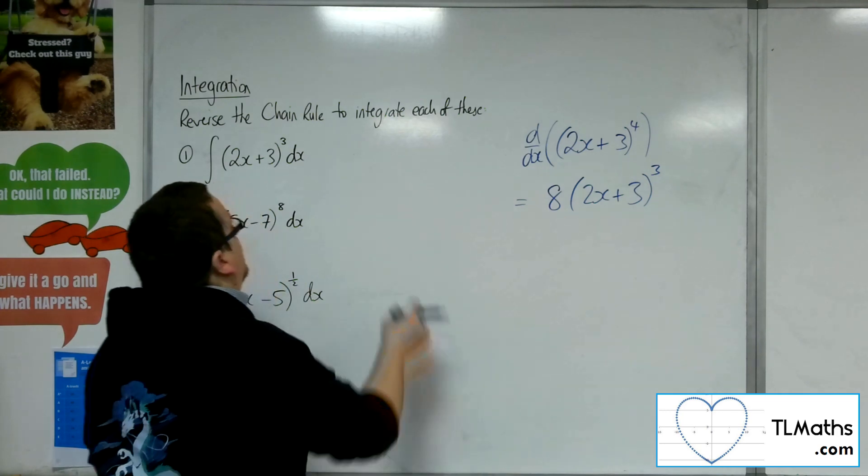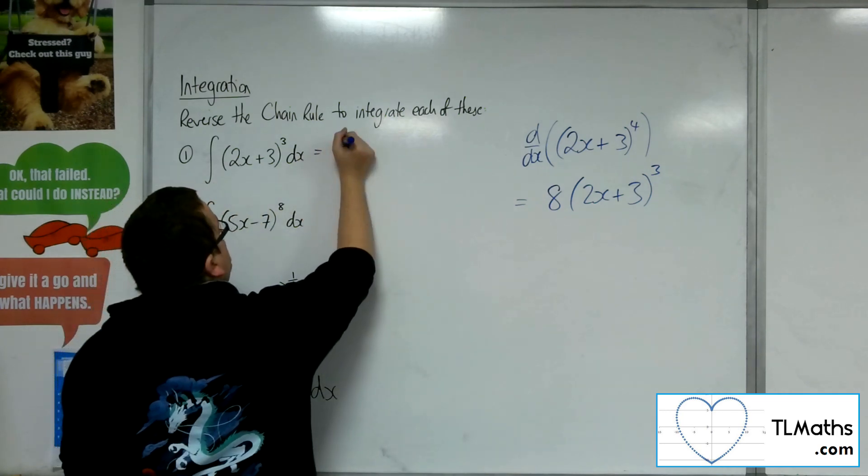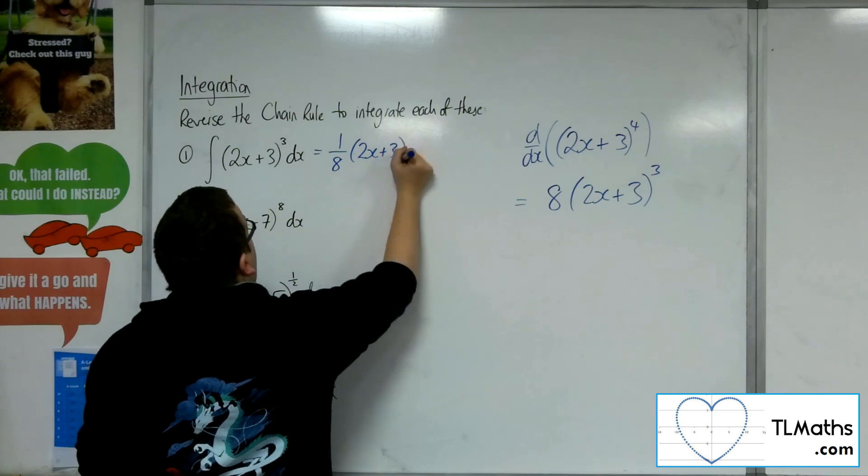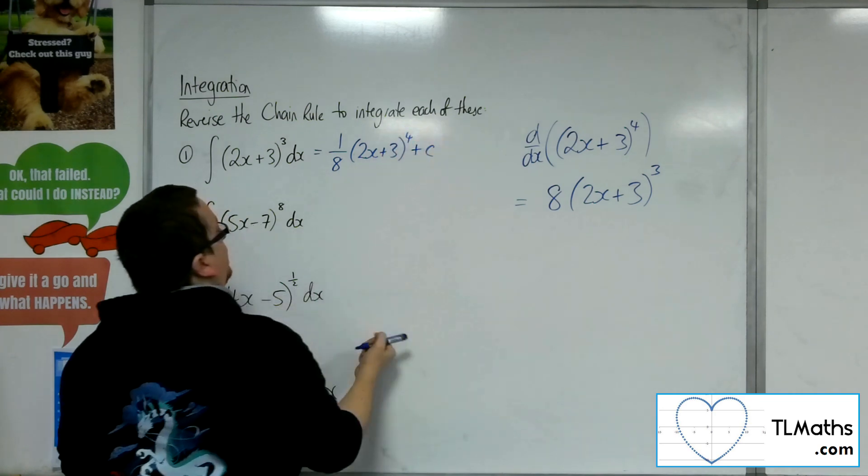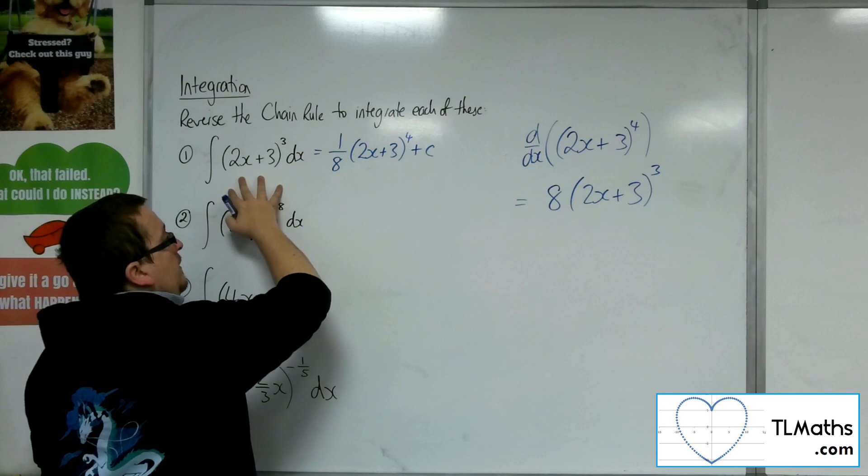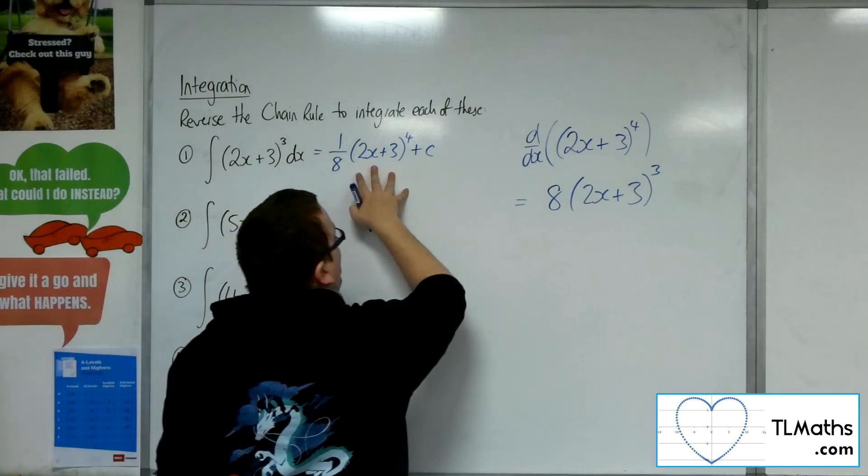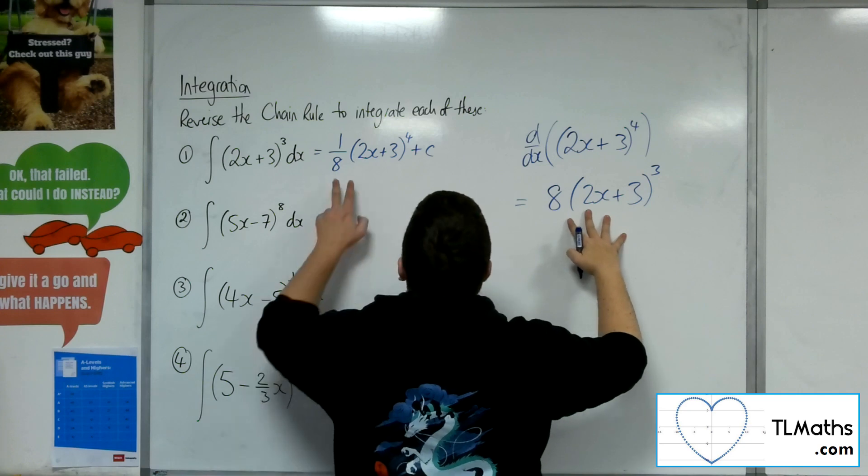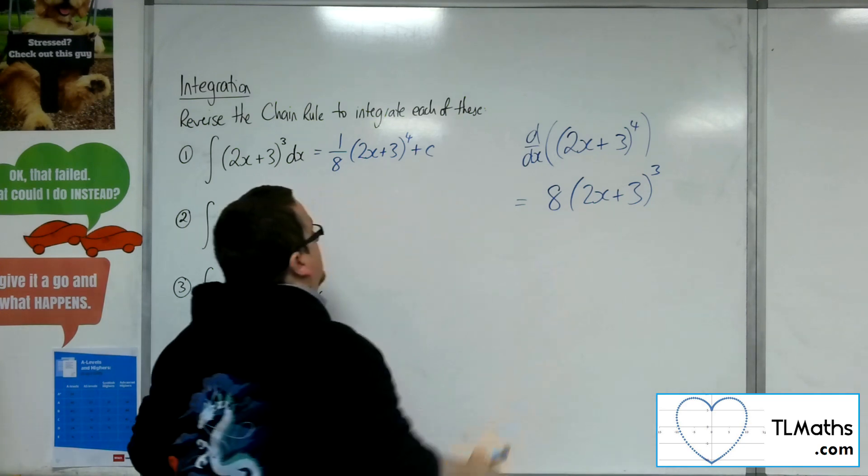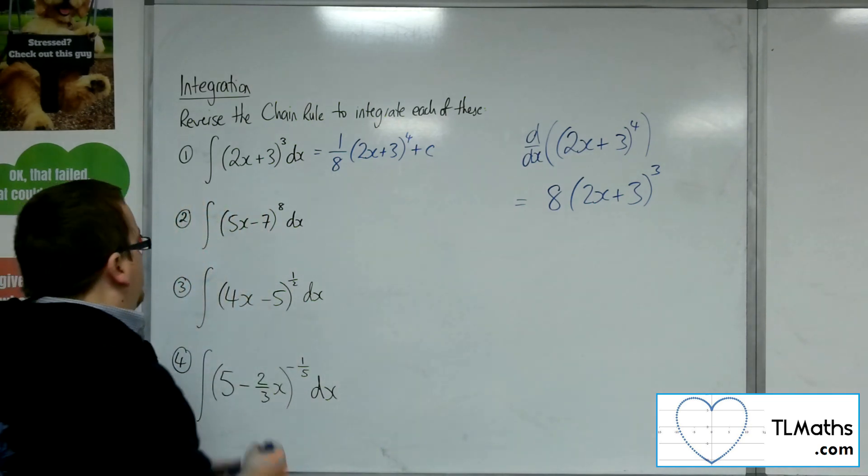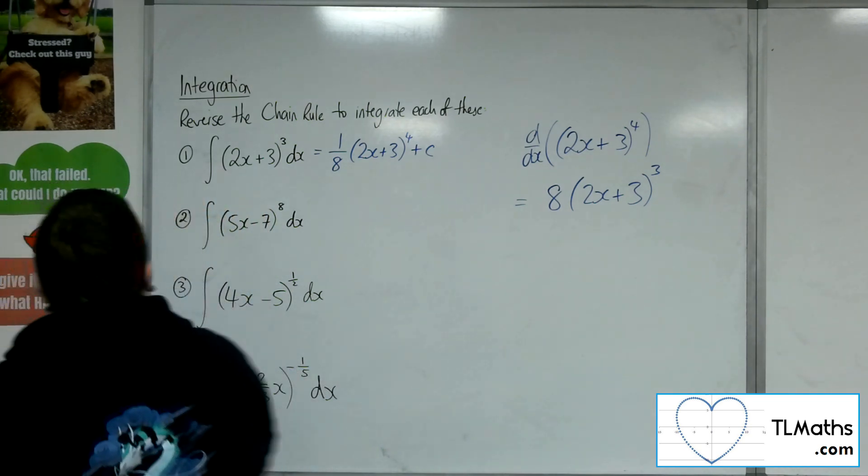So I know that this will have to integrate to 1 over 8, 2x plus 3 to the 4, plus a constant C of integration, because that will differentiate to that. Because I know that the 2x plus 3 to the 4 will differentiate to 8 lots of 2x plus 3 cubed. So 1 8th of that will knock out the 8, and the C would have gone through differentiation anyway. So that's our first one.